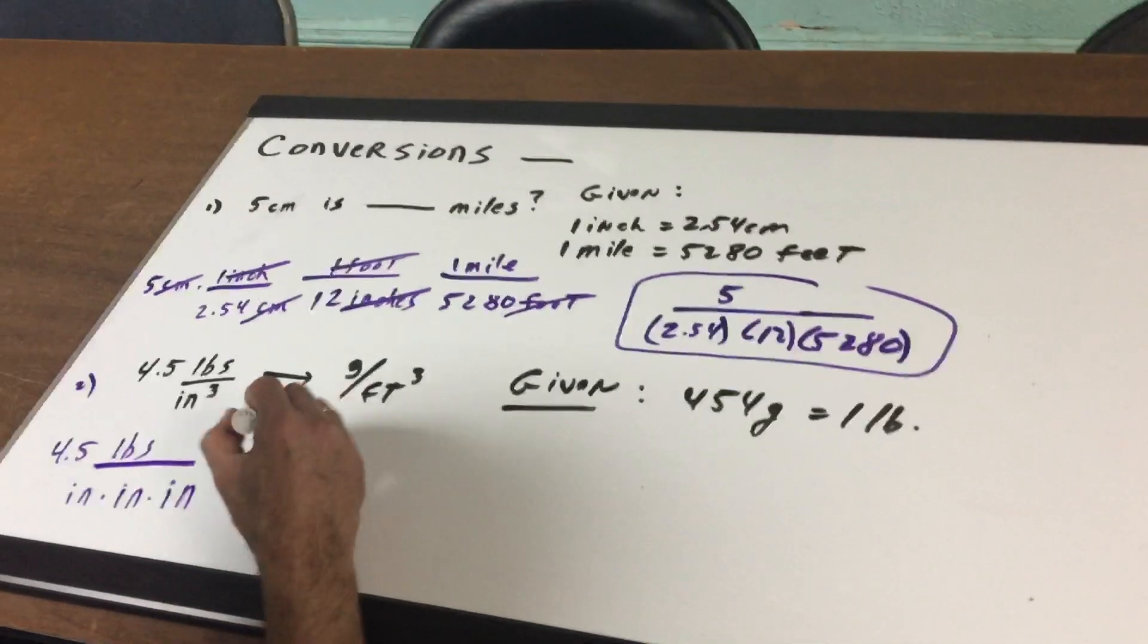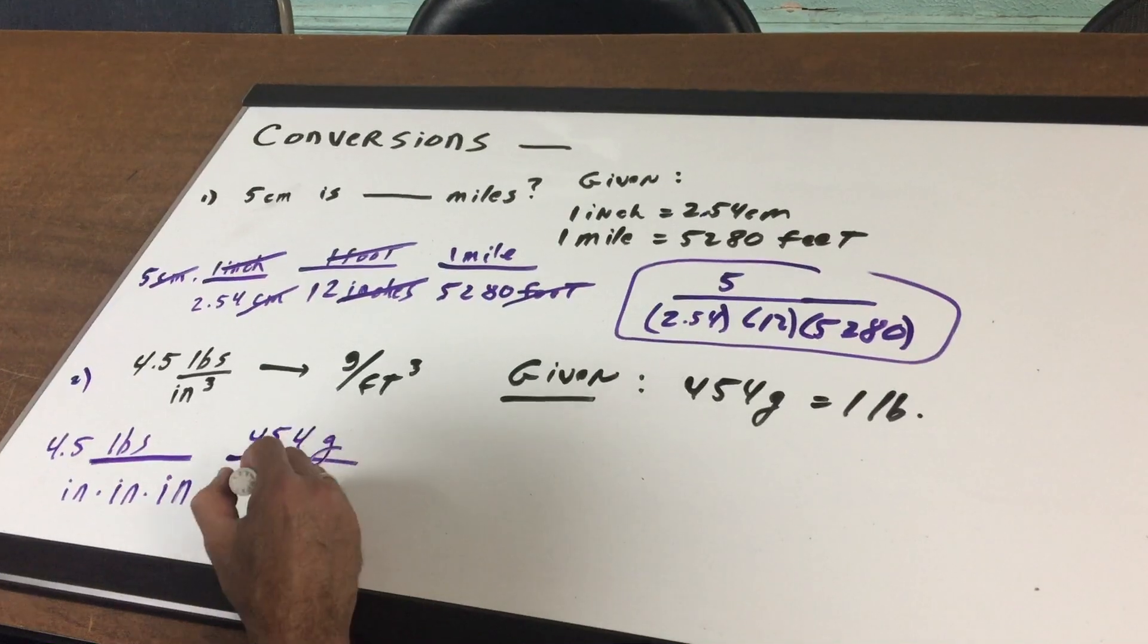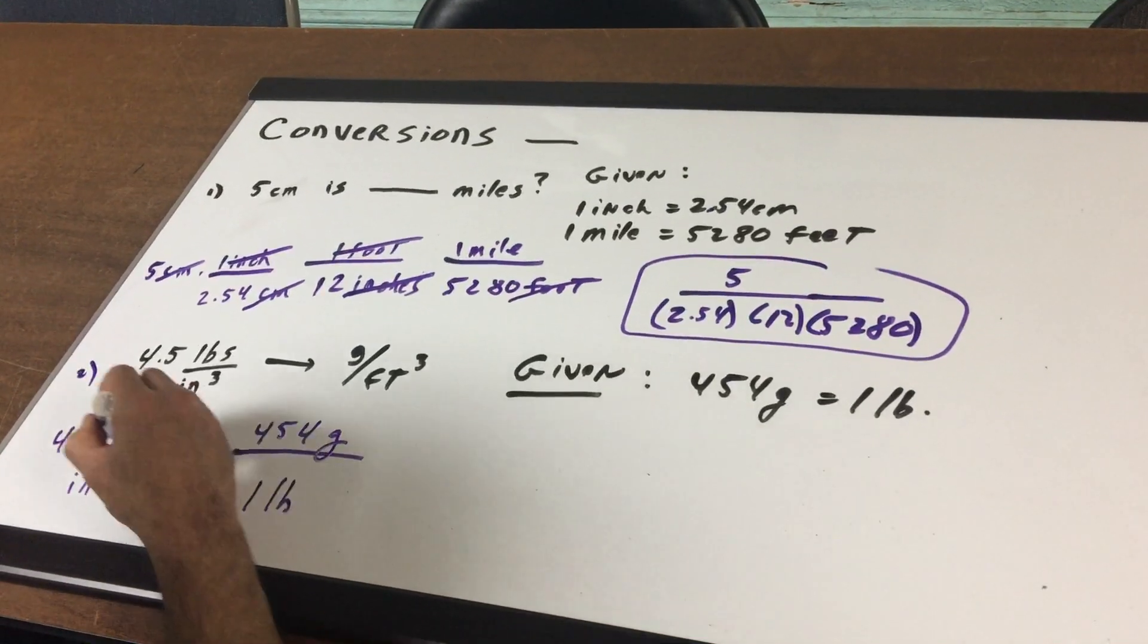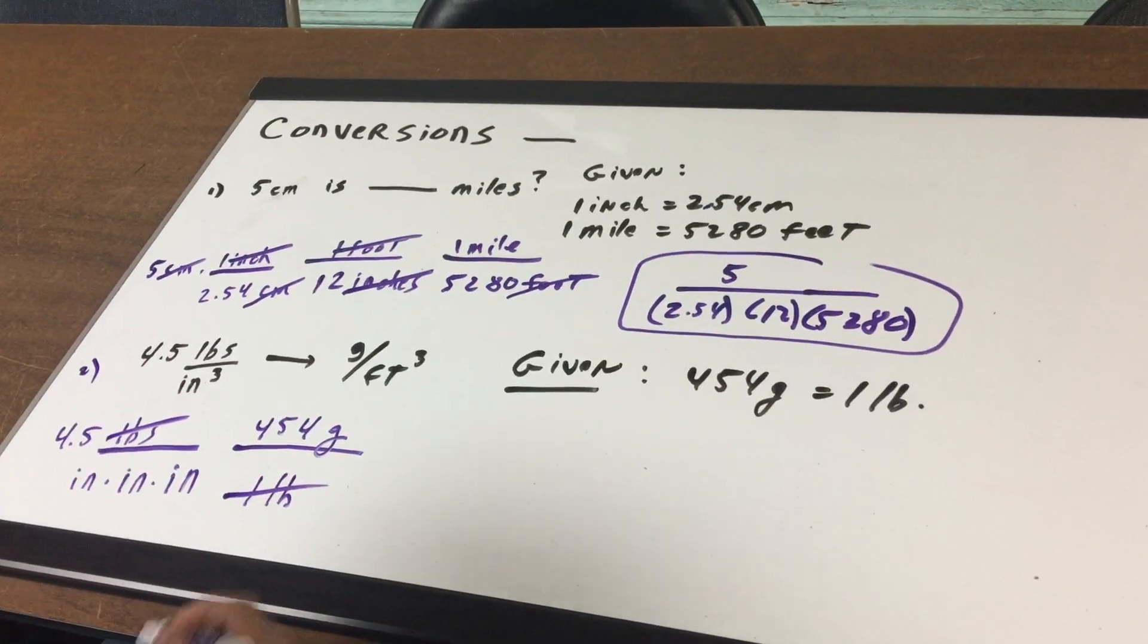Now let's get the numerator first. We know that there's 454 grams in one pound. And pound and pounds cancel. Well that's good. I got the numerator already in my grams.